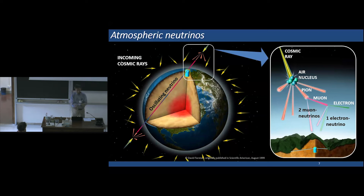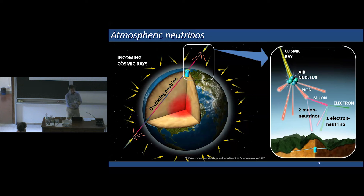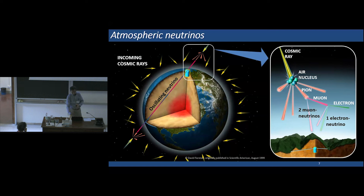Now I want to change to another topic: atmospheric neutrinos. As you know, cosmic ray particles enter into the atmosphere and they interact with air nuclei. Typically, pions are produced, and of course pions decay to a muon and then to an electron. Therefore, during this decay chain, neutrinos are created, and these neutrinos are observed in underground experiments.